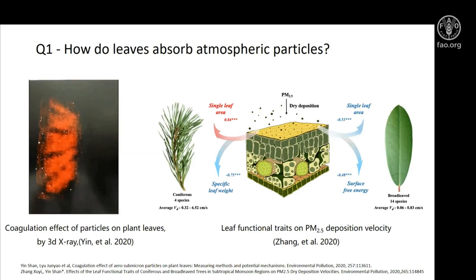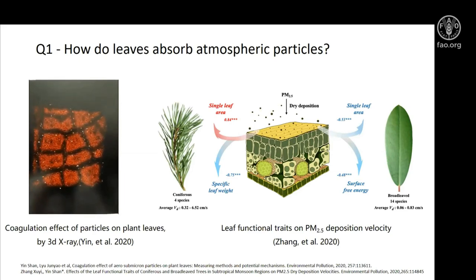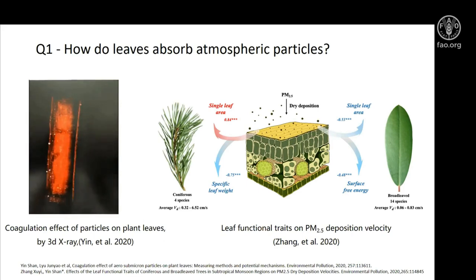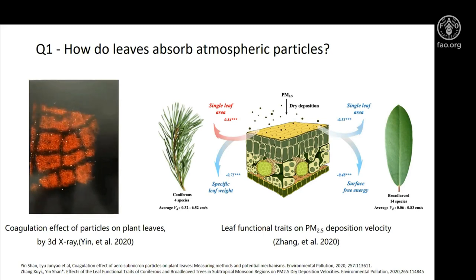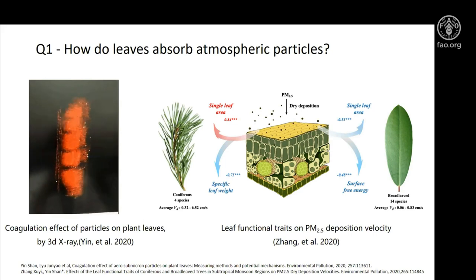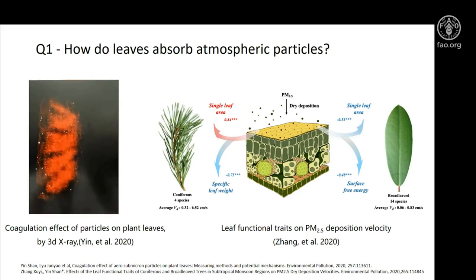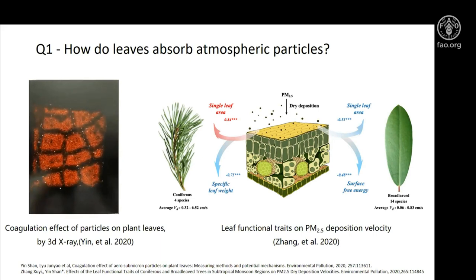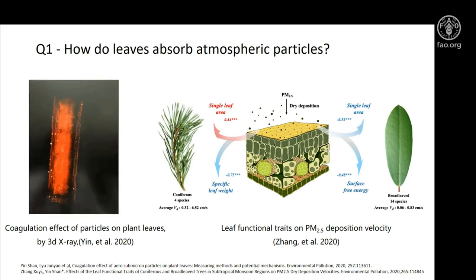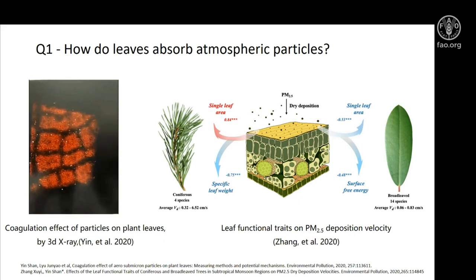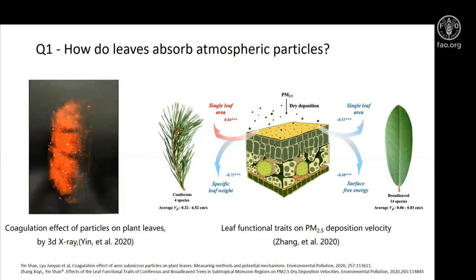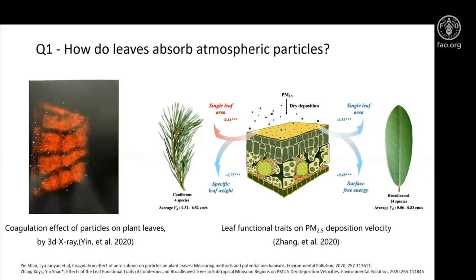To answer the first question — how do leaves absorb particles — as the figure shows, a coagulation effect happens on the leaves, which means small particles combine and accumulate into larger-sized particles. That helps leaves to absorb or fix more particles from the air. From the functional traits of leaves, we found that single leaf area, specific leaf weight, and surface free energy were the main influential factors of particle deposition on leaves.